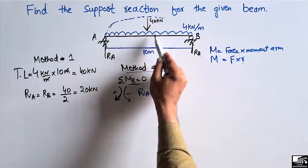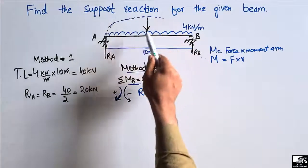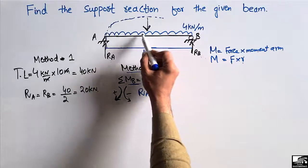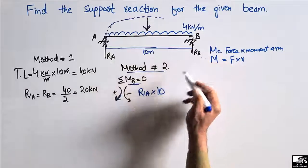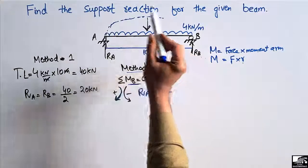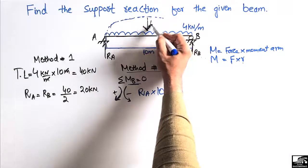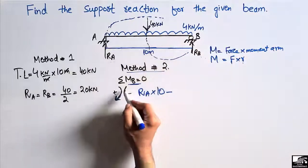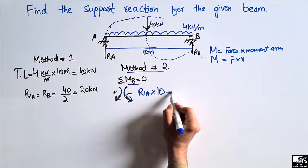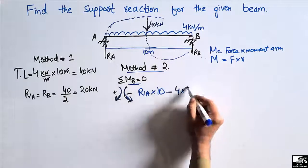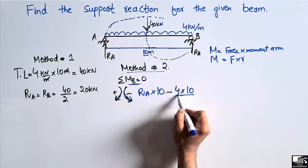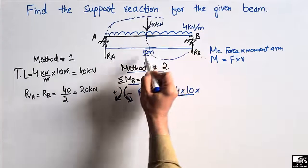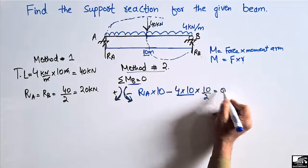The uniformly distributed load of 4 kilonewton per meter also creates a moment about point B. We convert the UDL to a point load by multiplying 4 by 10, giving 40 kilonewton acting at the center of the beam. This force creates an anti-clockwise moment about point B, so it is taken as negative. The moment is −(4 × 10) × (10/2), where 10/2 = 5 meters is the distance from the center of the beam to point B. Setting the summation of moments at B equal to zero.